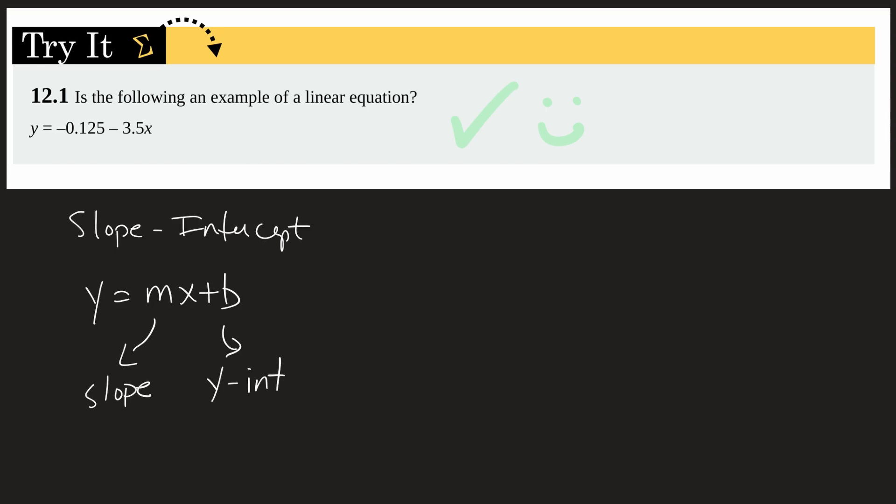Now, if you look, this looks somewhat similar to our equation up here in the Try It example. But it seems to be in a slightly different order. Now, because this is addition, we can simply rearrange these terms. And we can rewrite this as y equals b plus mx. So when we write it like that, it's in the same form as we have up here on our example. b is still the y-intercept and m is still the slope.